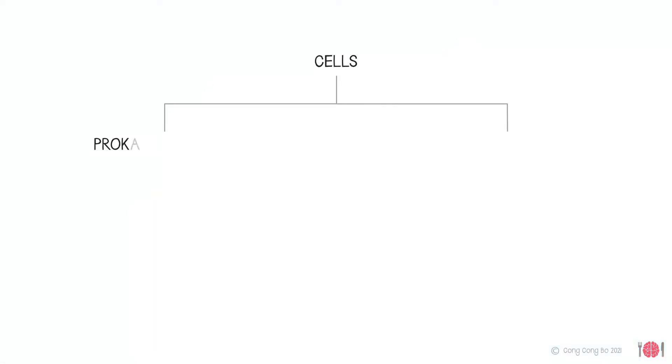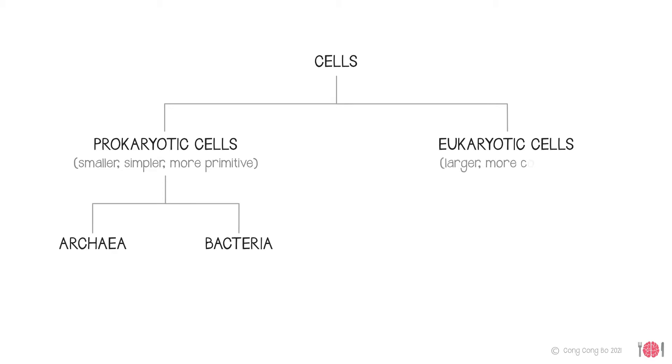Cells can be divided up into prokaryotic cells and eukaryotic cells. Prokaryotes are smaller, simpler and more primitive. They're either bacteria or archaea. Eukaryotic cells are more complex and are either plant cells or animal cells, which are the building blocks of us humans.